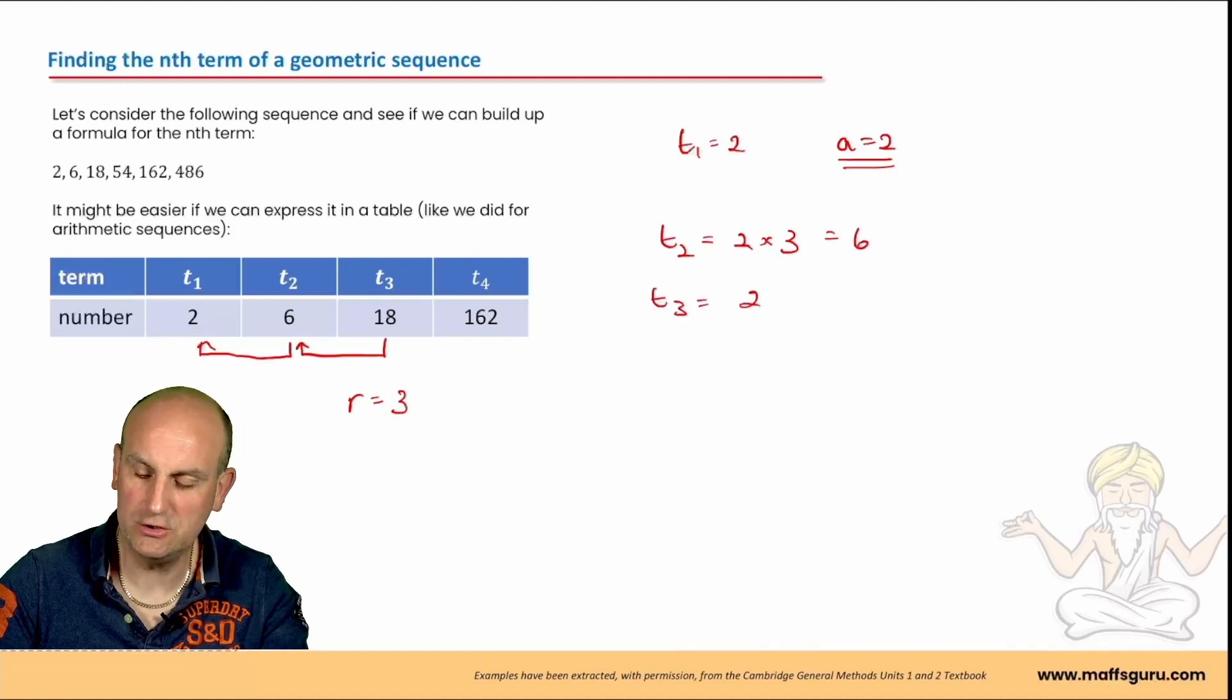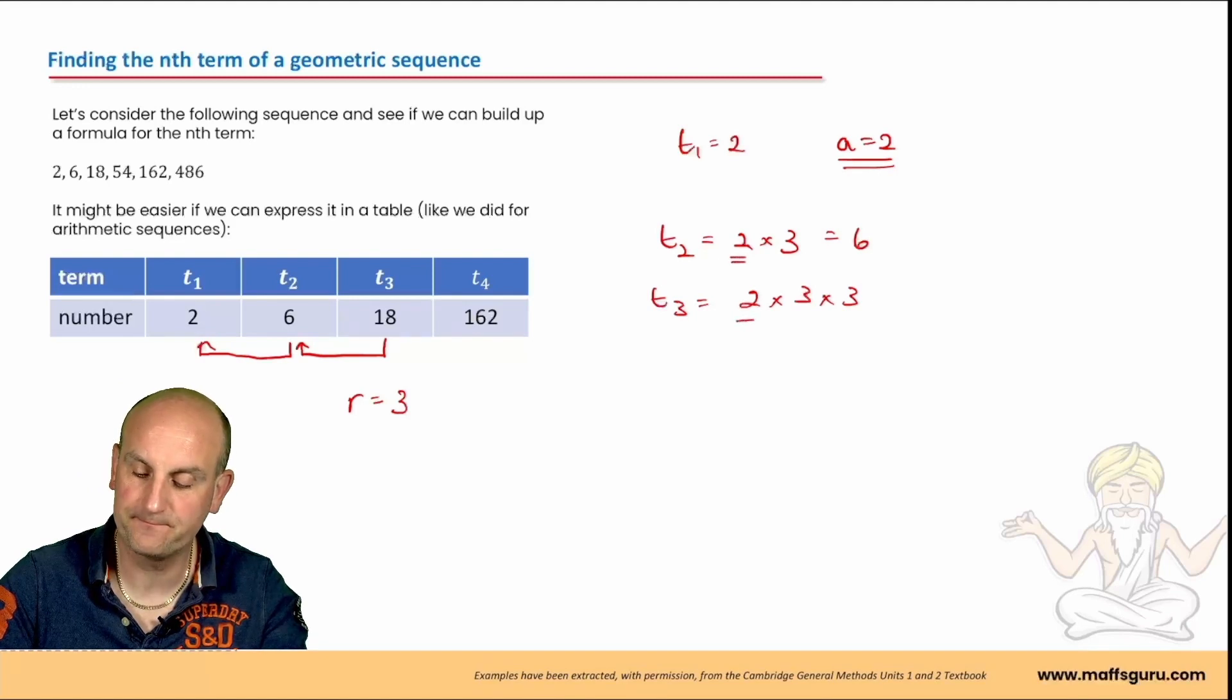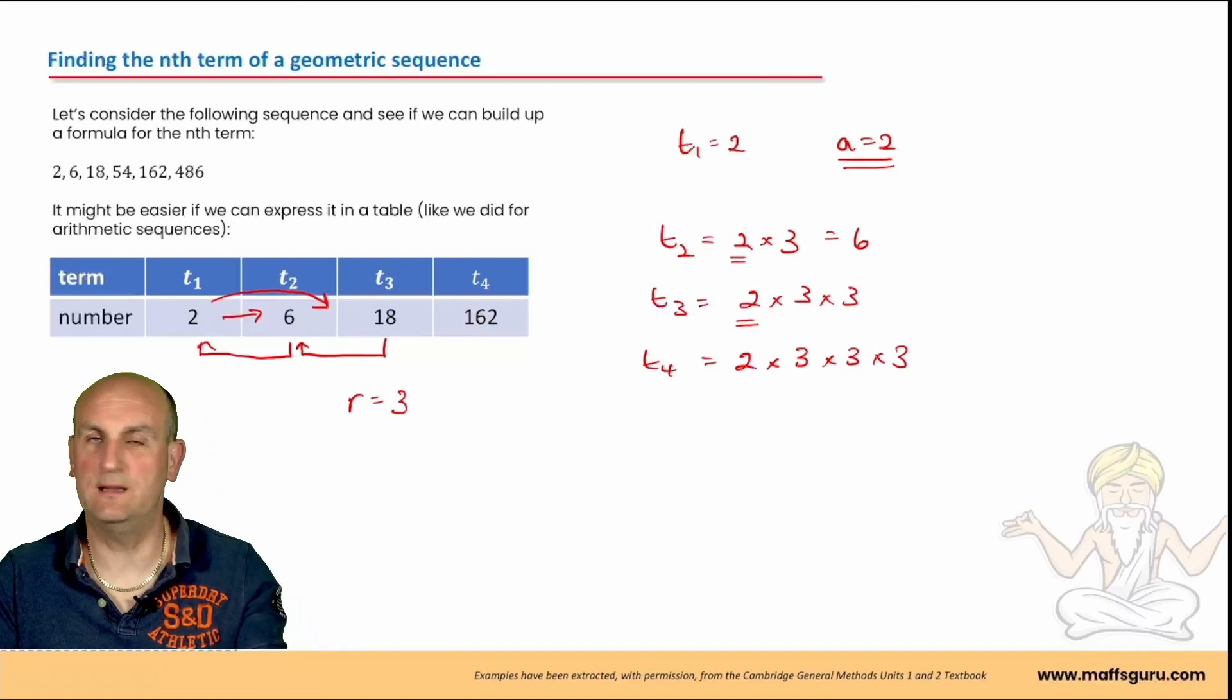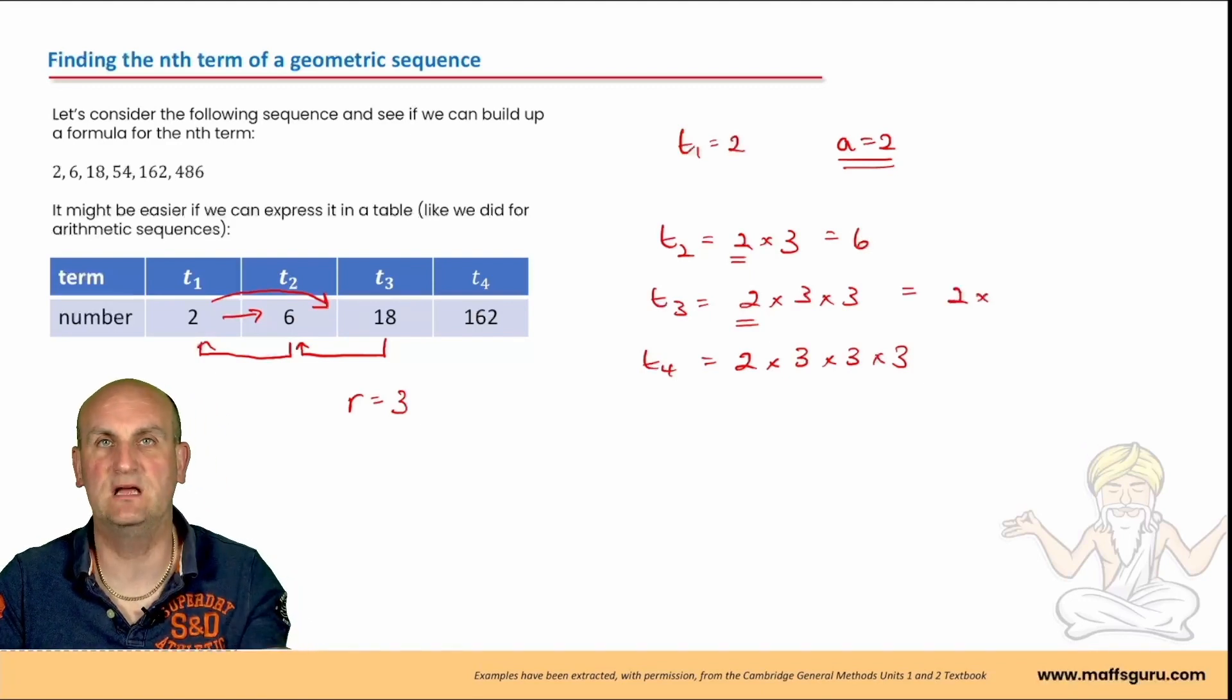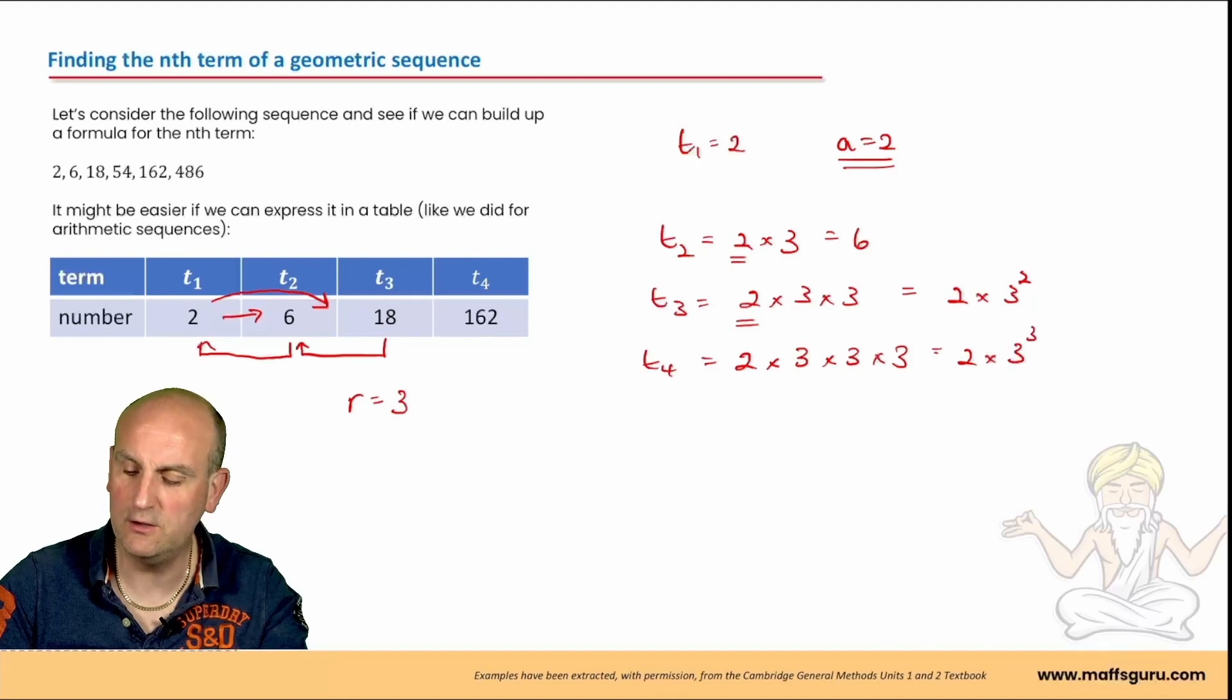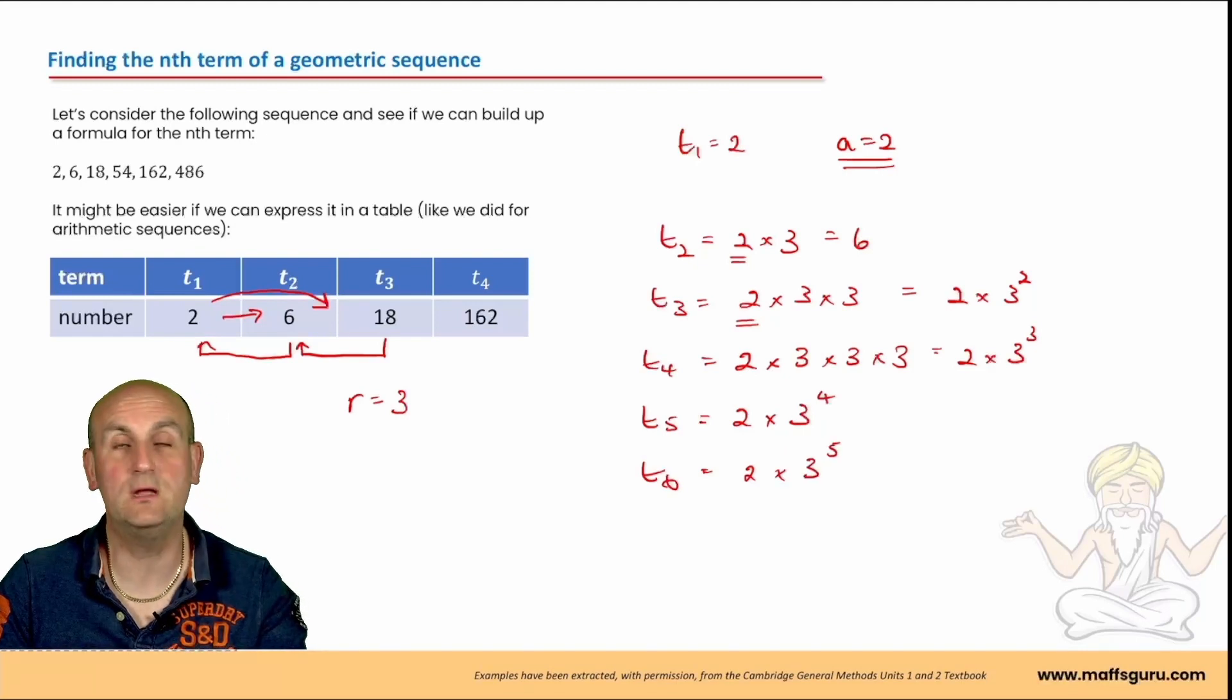And that gave me 6. Well, t3 was 2 times 3 times 3. Because I'm always trying to find a way of going from my first term to my term. To get to t4, I go 2 times 3 times 3 times 3. There must be a quicker way of being able to write this. That can be written as 2 times, when we've got a number multiplied by itself, I can use powers or index notation. That's 2 times 3 squared. That there would be 2 times 3 cubed. So t to the power of 5 would be 2 times 3 to the power of 4, and t6 would be 2 times 3 to the power of 5. Do you notice something here?